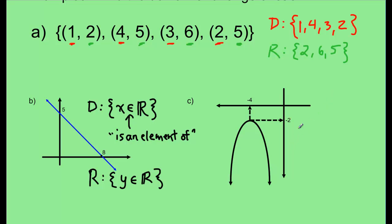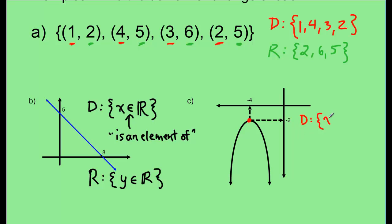Now let's look at this parabola. It's facing downwards and has a vertex at the point (-4, -2). Let's start with domain: what are the possible values that x could be? The parabola goes on forever downwards and always spreads outward — it will eventually hit every possible x value going right to infinity and every x value going left to negative infinity. So x can be any value: x ∈ ℝ.